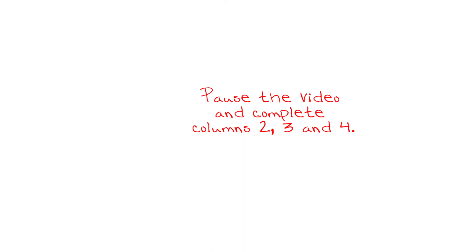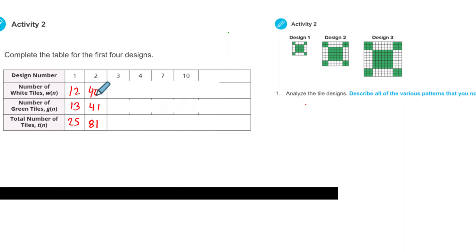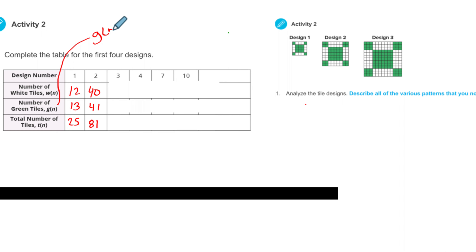Hopefully you were able to fill in that table, but it is tricky. Let's check it out. I did the first design and the second design, and I want to find a pattern to get the third and fourth designs. Let's look at the green tiles first — G of N. They're using function notation: G tells us we're going to get the number of green tiles, and N stands for the design number. When I plug a 1 in, I should get 13. We're looking for a function because we have to go out to 7, to 10, and further — we can't count forever.